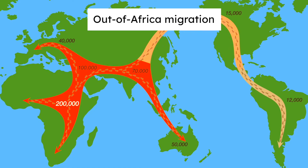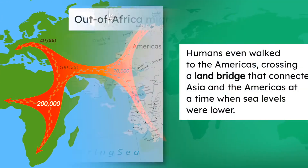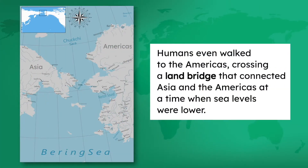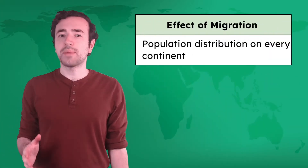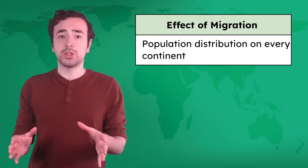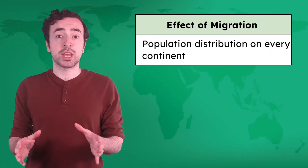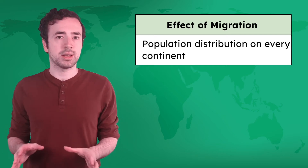Humans walked through Asia and Europe and took simple boats to places like Australia. Humans even walked to the Americas, crossing a land bridge that connected Asia and the Americas at a time when sea levels were lower. This early migration distributed human populations across nearly every continent.